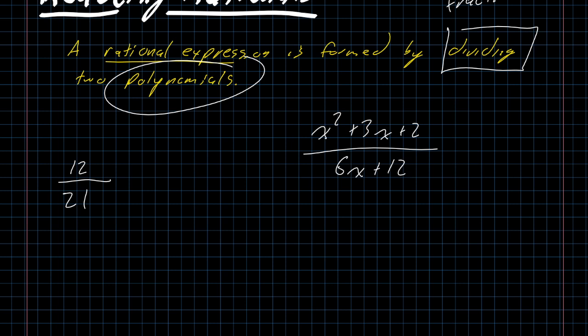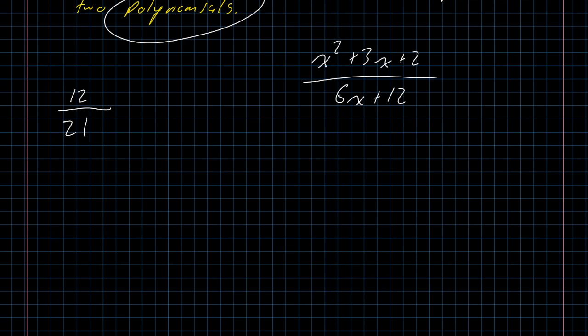If we look at an example like 12 over 21, you probably would write just the solution without writing the intermediate step. But hopefully you remember you would factor this. You would write 12 as 3 times 4, you would write 21 as 3 times 7. You would recognize that there is a common factor of 3 in the numerator and denominator, cancel those things out, and you would be left with 4 over 7.